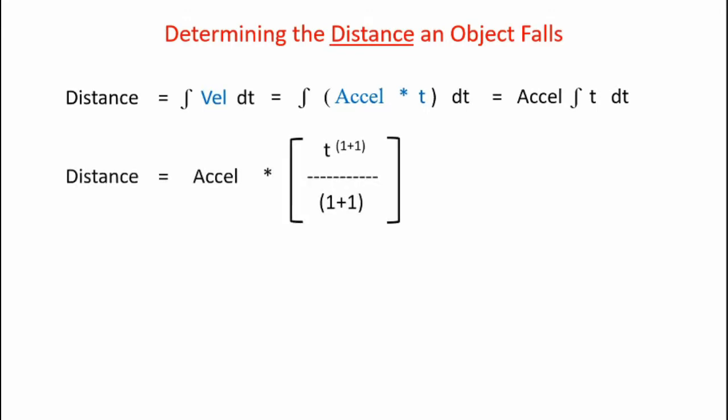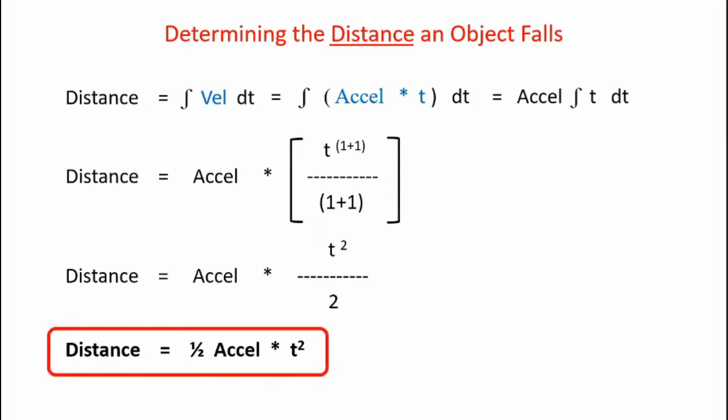Now applying the same laws, we get this equation for distance. Once we do the math, we see that distance is equal to acceleration times t squared over two. We can rewrite that as distance is equal to one half acceleration times t squared. So that's another useful equation.